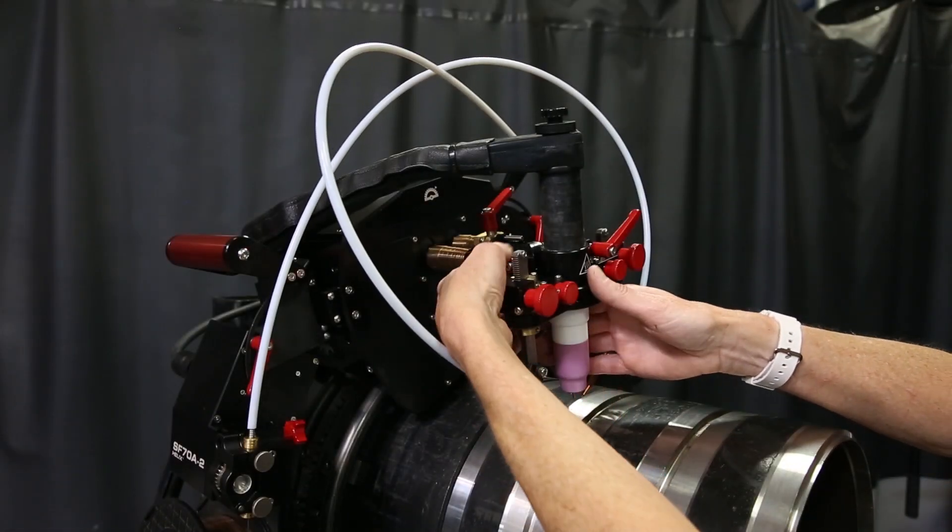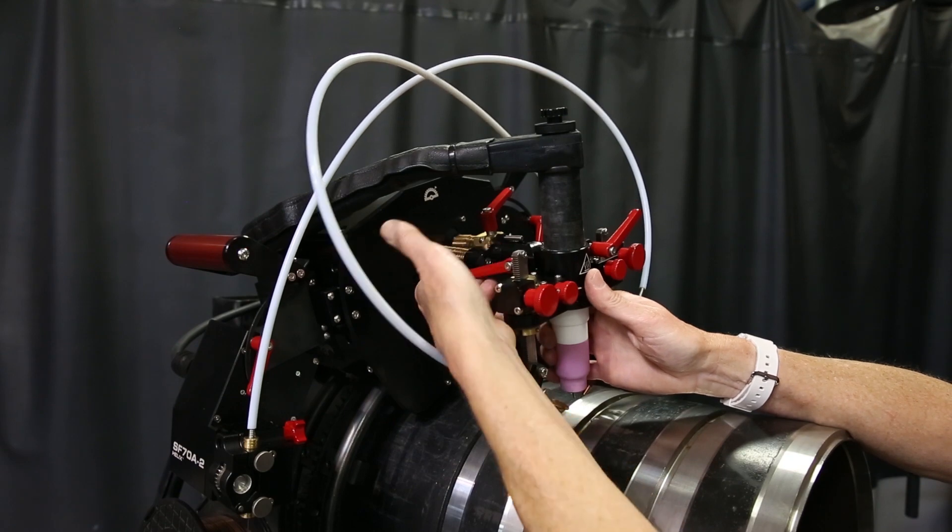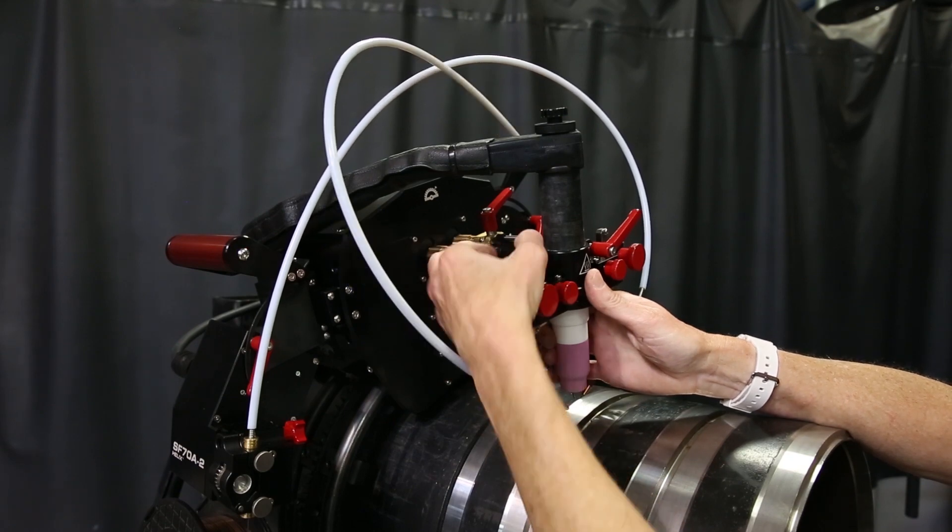Now I'm going to show you the adjustment levers on the torch. Everything is color coded red for easy visibility.